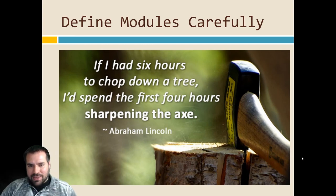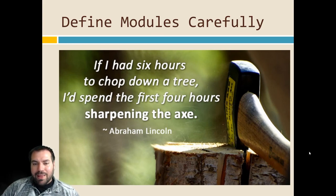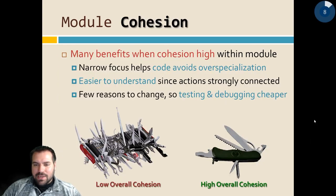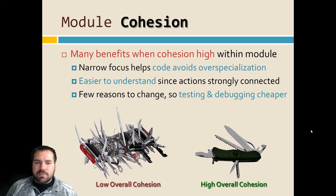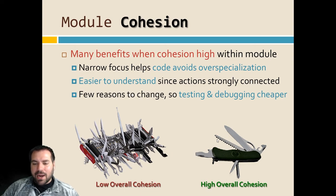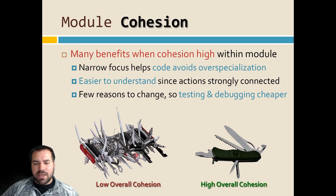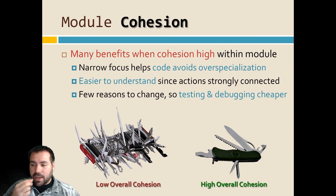Those are three of the big things we want out of well-designed code. Abraham Lincoln had a good quote — paraphrased: doing more planning is always worth it. Last time we talked about cohesion, meaning the grouping of modules makes sense. Here we have tools that make sense to have together. There are lots of projects where you'd want most of these utilities, but there are cases where things need to be split into smaller packages or modules with better cohesion.